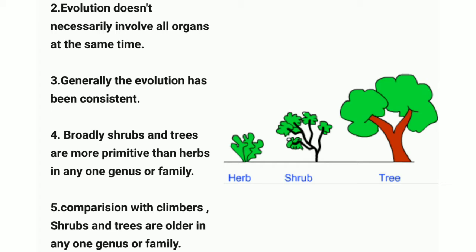Point four: broadly, shrubs and trees are more primitive than herbs within one genus or family. Herbs are grasses, shrubs include rose and orange plants, and trees include pine and neem trees. This means shrubs and trees are more basic and older than herbs, while herbs are considered more advanced compared to shrubs and trees.